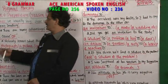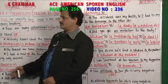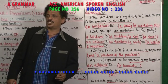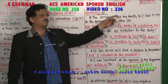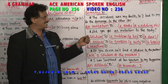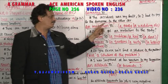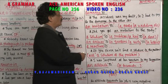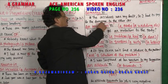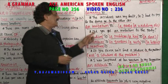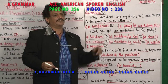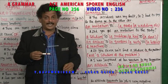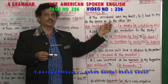So, earlier you have seen noun plus for, noun plus of, now noun plus to. Damage to — the accident was my fault, so I had to pay for the damage to the other car. Damage to. An invitation to — an invitation to a party, an invitation to a wedding. Invitation is a noun, to is a preposition. Did you get an invitation to the party? Invitation to the marriage.